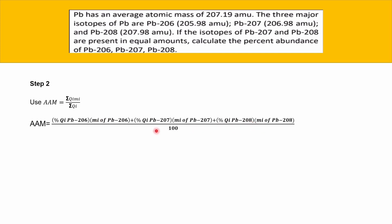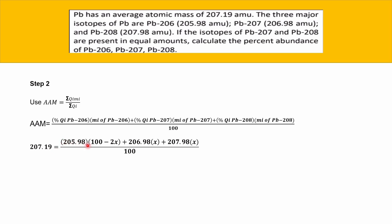Then divide by 100 because the total isotopic abundance is 100. After getting to know this formula, we plug in all the values: 207.19 = (205.98 × (100 − 2x) + 206.98 × x + 207.98 × x) ÷ 100.